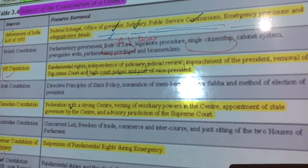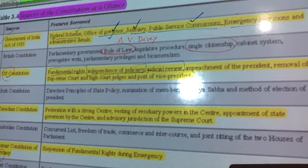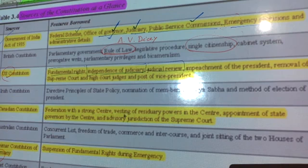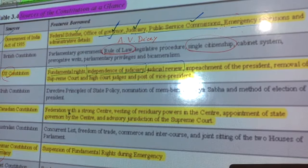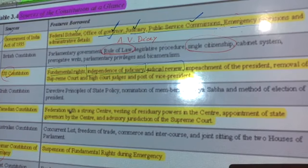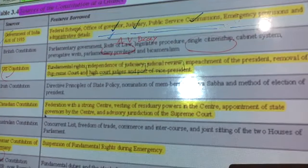From the Canadian Constitution we borrowed the concept of federation with a strong center — meaning residual powers are vested in the center. India is thus a quasi-federal nation. The federal provisions and the idea of a strong central government were derived from Canada.